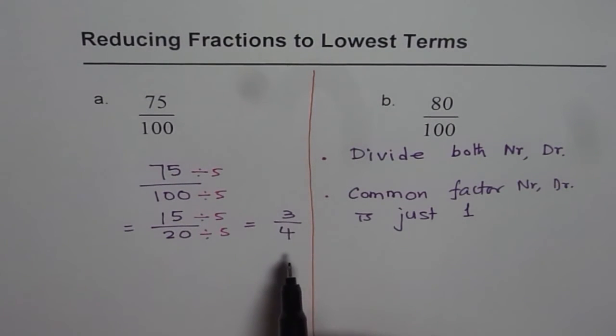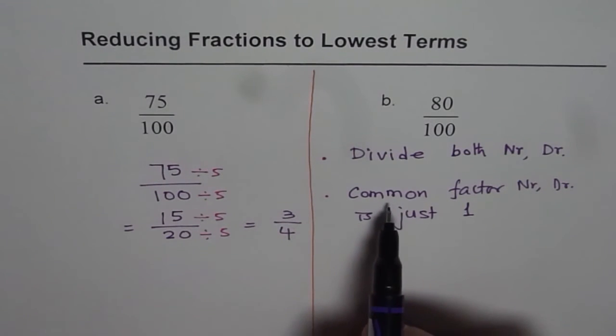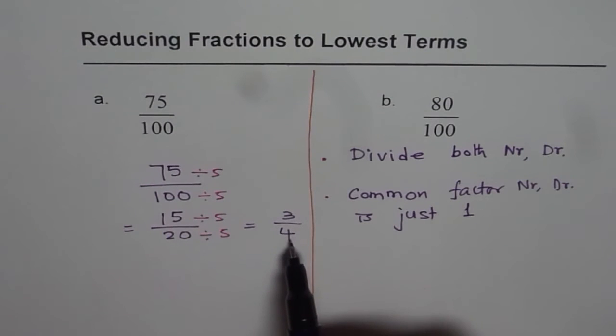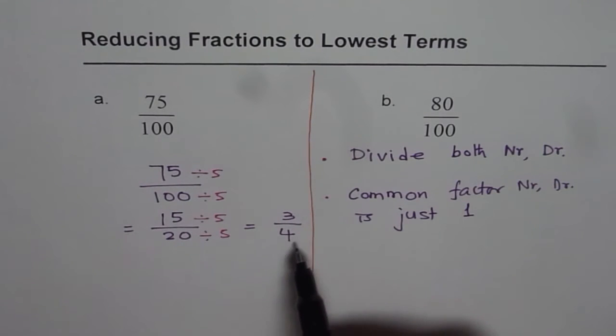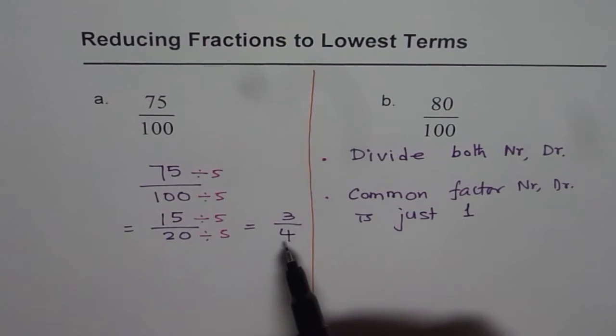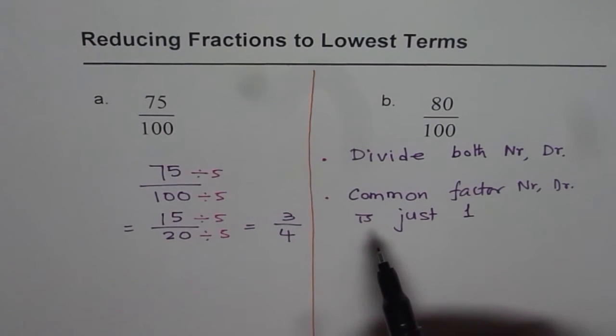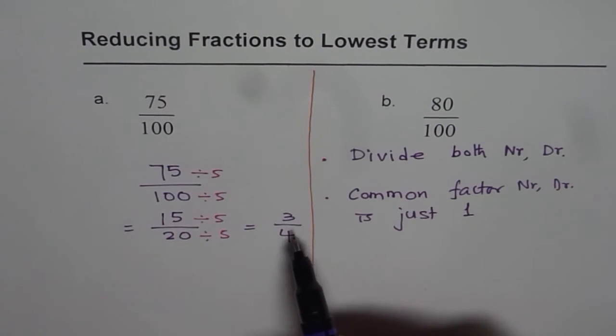Now, can I divide them further? No, there is no common factor. The common factor between 3 and 4 is just 1. 4 can be written as 2 times 2. 3 is 3 times 1. There is nothing common between them apart from 1. So, this is the lowest term.